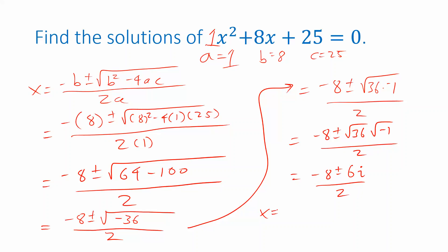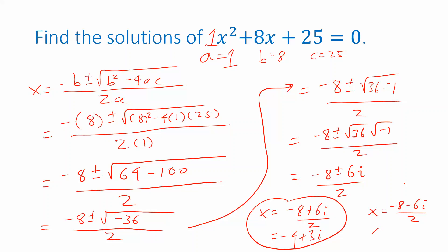We get one solution from the plus sign: negative 8 plus 6i, divided by 2. The other solution uses the minus sign: negative 8 minus 6i, divided by 2. You cannot combine negative 8 and 6i because they are not like terms — the 6 is a coefficient of i while negative 8 is not. However, we can simplify by dividing both parts by 2: negative 8 over 2 is negative 4, and 6i over 2 is 3i. So the two solutions are x equals negative 4 plus 3i and x equals negative 4 minus 3i.